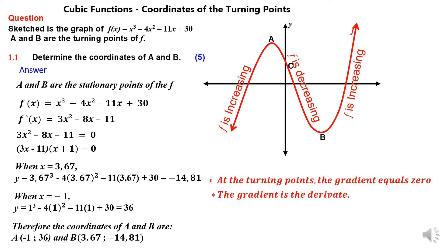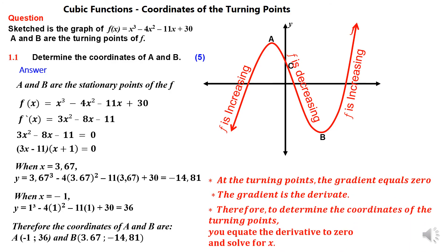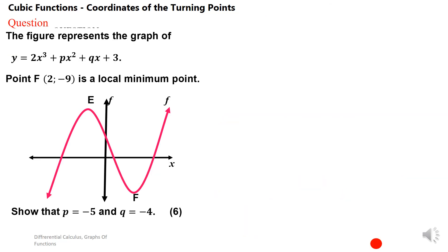To quickly summarize: to determine the coordinates of the turning point, we differentiate the equation of the graph, equate the derivative to zero, and solve for x. Why do we equate the derivative to zero? Because the derivative is the gradient, and at the turning point the gradient is always equal to zero.